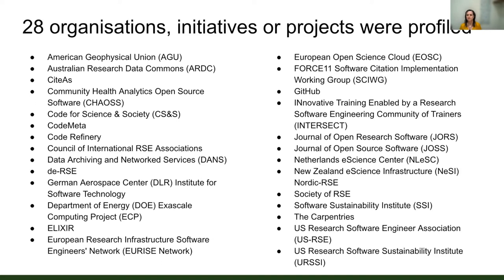The 28 organisations and projects we covered are really only a fraction of who we could have talked to — this was just a sample to get started, to see if the work would yield something interesting and if there was a way of structuring our findings that would enable others to find the outputs useful. The organisations varied from very large international intergovernmental efforts like Elixir in the Life Sciences and the European Open Science Cloud, through to very small discrete projects with a short timeframe, such as national efforts like NZRSE in New Zealand, as well as specific infrastructures like the German Aerospace Centre, and organisations that focus on particular areas like the Code Refinery in skills and training.